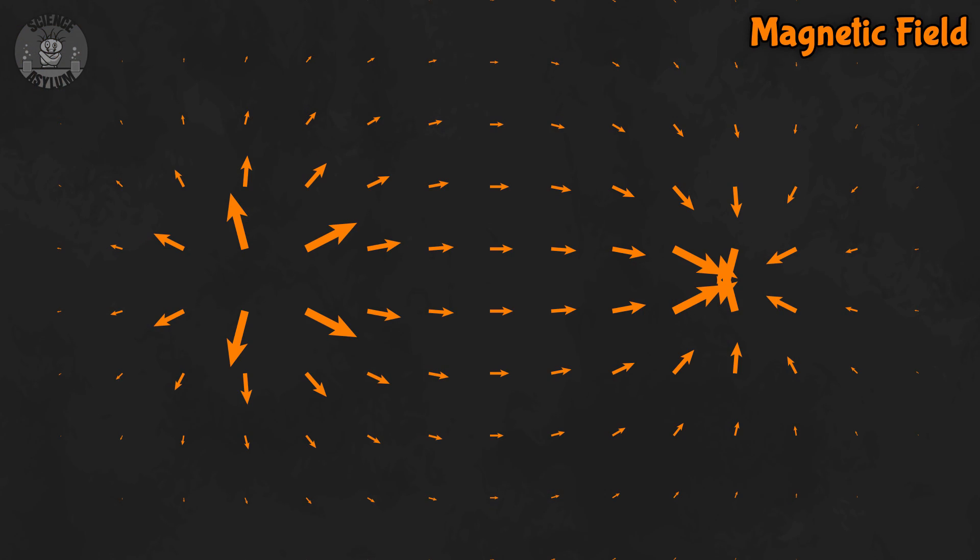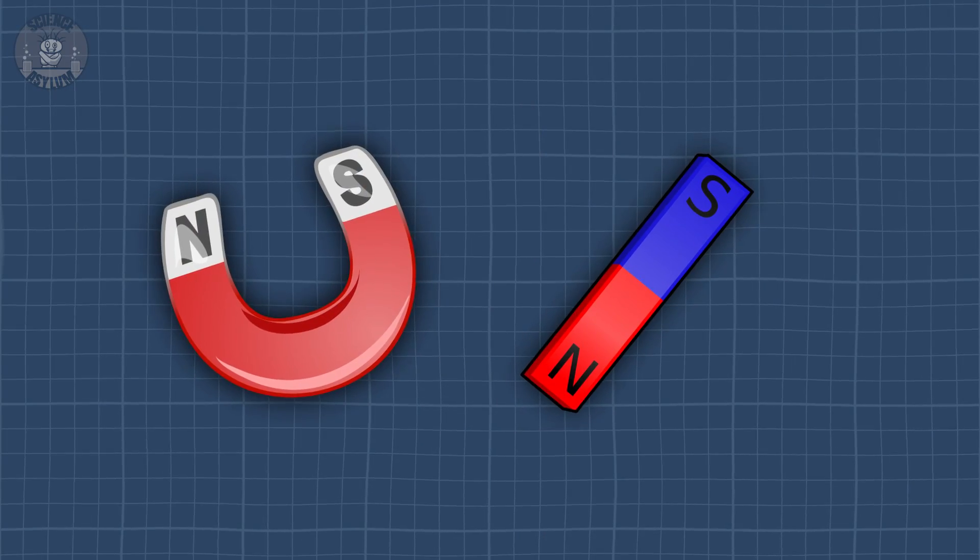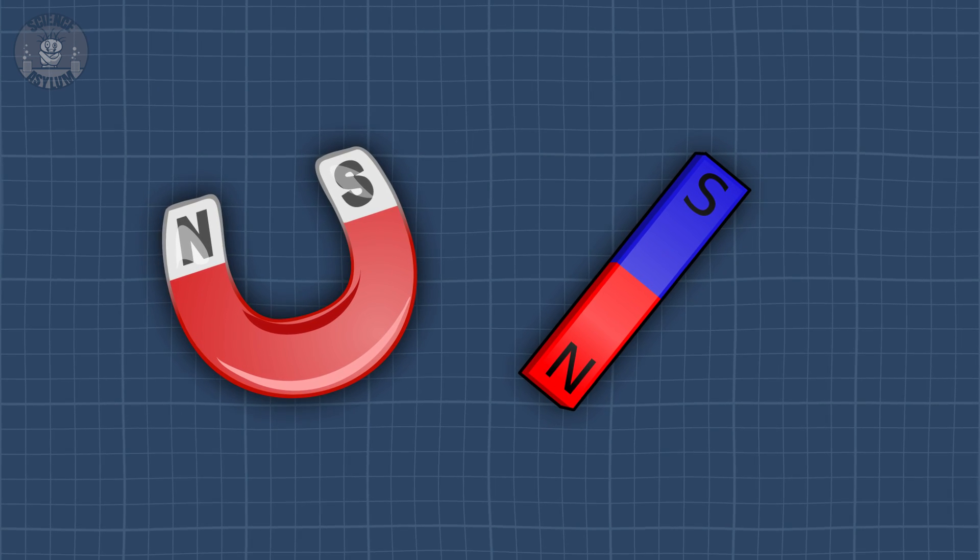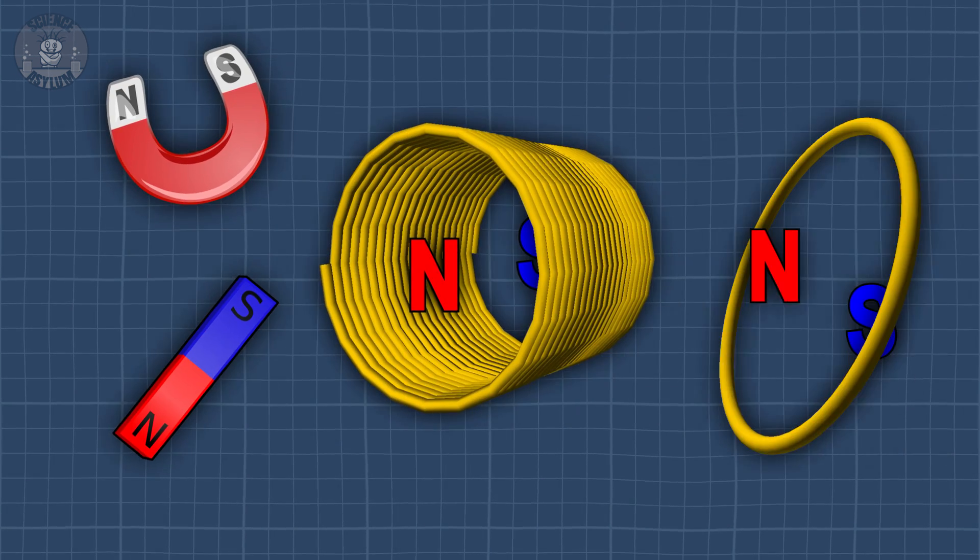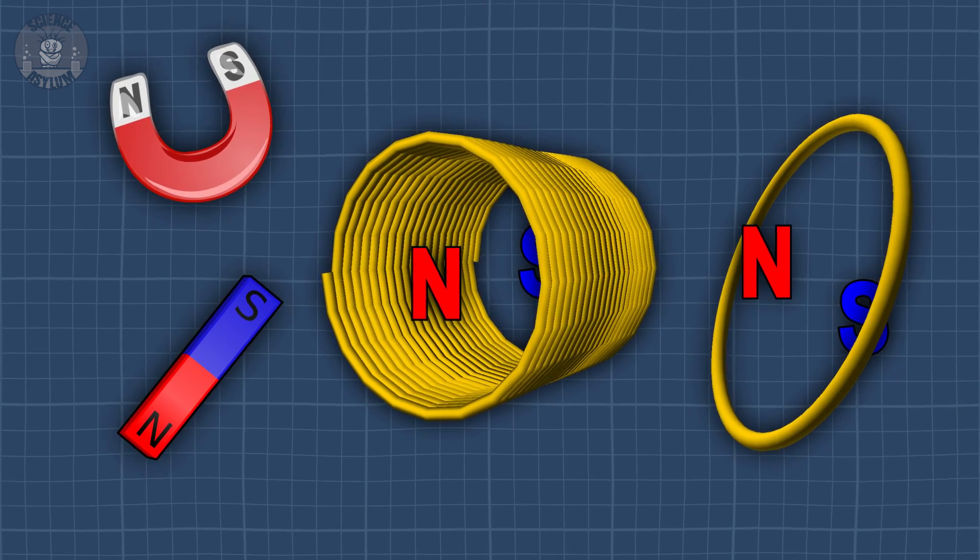Now for the basic properties. Based on the shape of the magnetic field, we notice there are two opposite sources. We call those sources poles and label them North and South. Why we use those labels has to do with Earth's magnetic field, but that's a topic for another day. All permanent magnets have at least one North Pole and one South Pole.